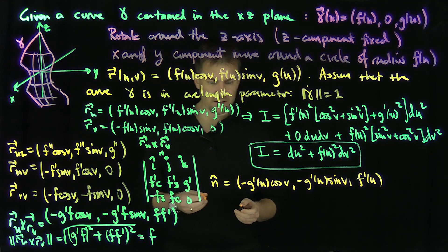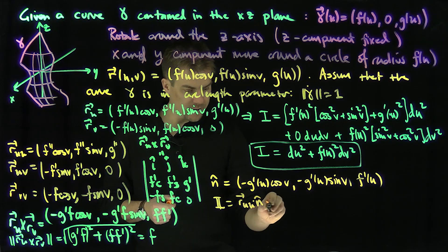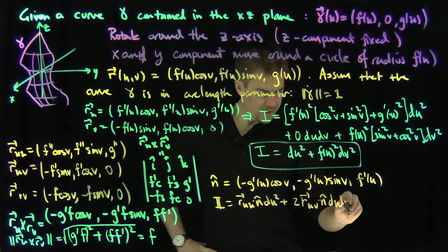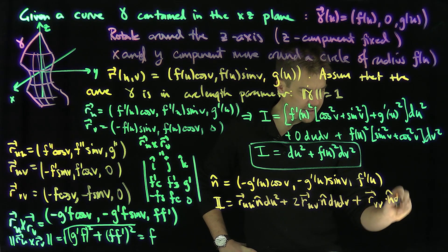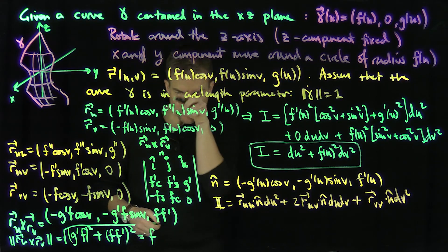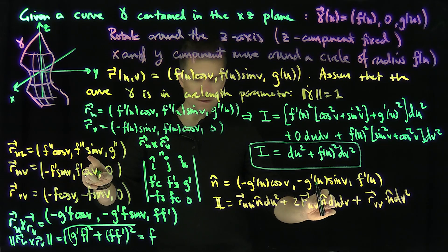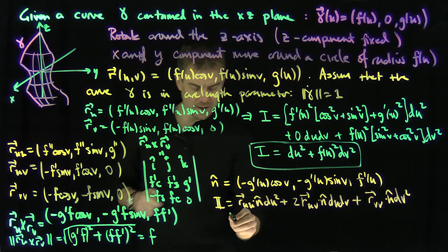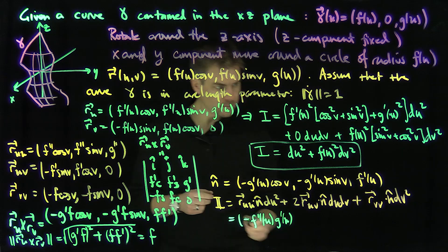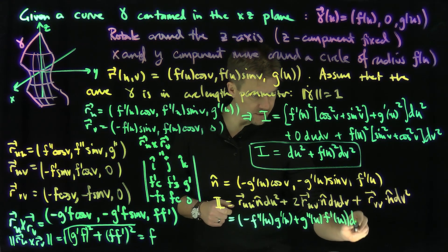Now the second fundamental form is II = (r_uu · n̂)du² + 2(r_uv · n̂)du dv + (r_vv · n̂)dv². Let's compute r_uu · n̂: we get -f''g'cos²v - f''g'sin²v + g''f' = -f''g' + g''f'. So the du² coefficient is (g''f' - f''g').